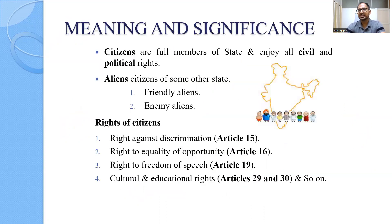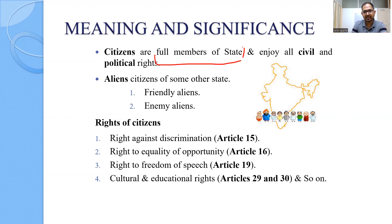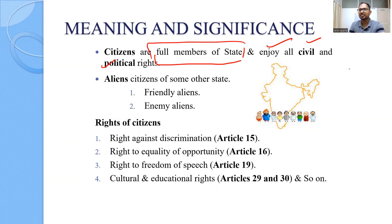Now, what is a citizen? Who is a citizen? A citizen is a person who is a full member of a state. For example, I'm an Indian citizen. Because I'm a full member of the Indian state, I enjoy all the civil and political rights, including fundamental rights, legal rights, and constitutional rights. For example, constitutional right under Article 326 — the right to vote. So I'm a citizen of India.